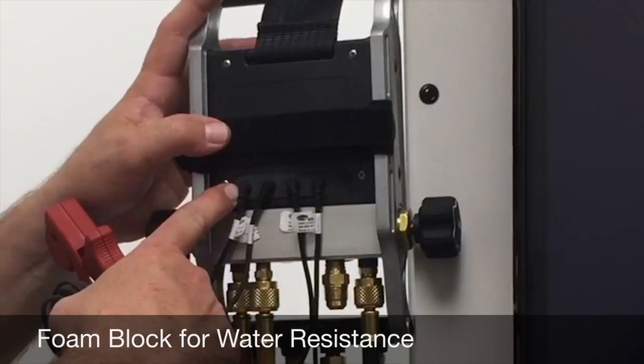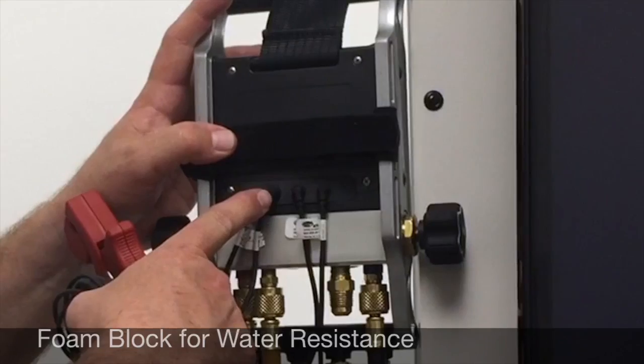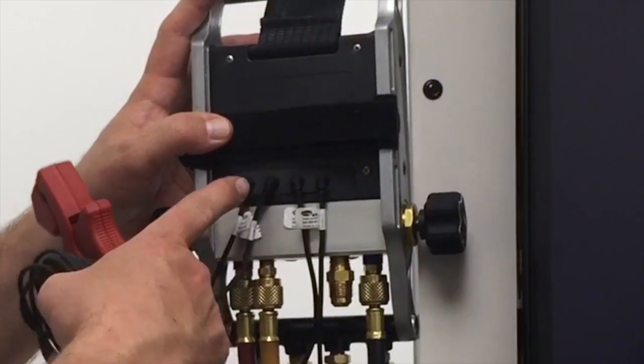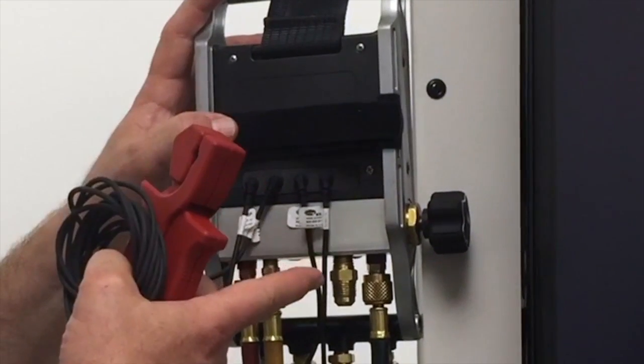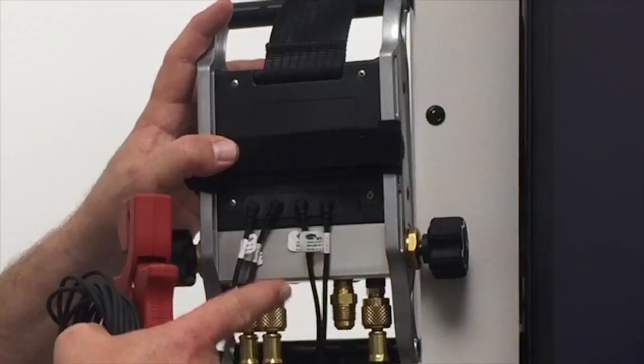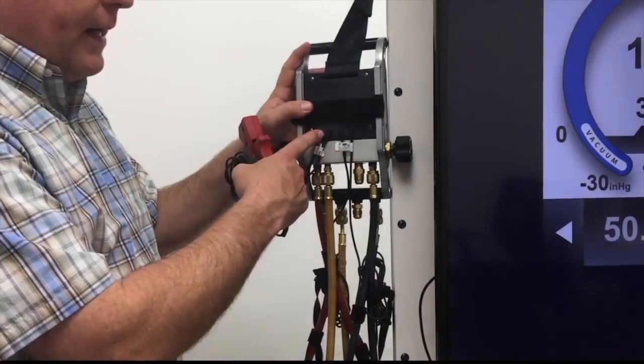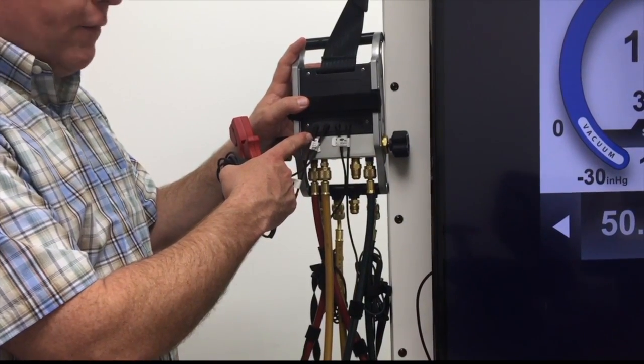Now you also notice on the back here, I have a foam block, and that foam block is used to keep water from getting into the case. If you don't have one, please call our customer service team and they'll send you one at no charge. This foam block is something you always want to use, and if you do get caught in the rain, it'll help keep moisture out of the Imanifold case.